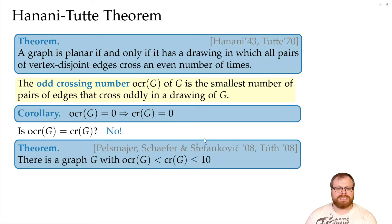Pilsmeyer, Schaefer and Stefankovic could show that there is some graph where the odd crossing number is strictly less than the crossing number. Toff later showed that for this graph the crossing number is at most ten.